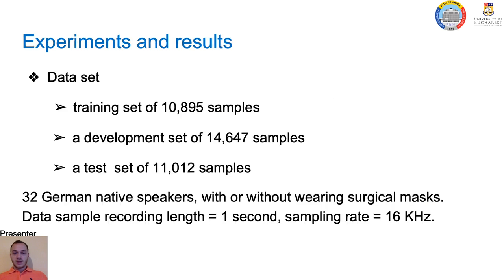The dataset was provided by the Mask-Augsburg Speech Corpus. The dataset is parsed into a training, development, and test set. It contains recordings of 32 German native speakers with and without wearing surgical masks. Each data sample, or utterance, is recorded for 1 second at a sampling rate of 16 kHz.